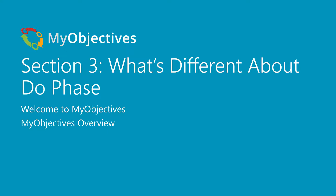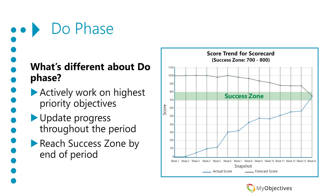Once this has been done across your team and all teams are ready to proceed, your system administrator will move the enterprise into the do phase. Let's talk about what's different in the do phase.